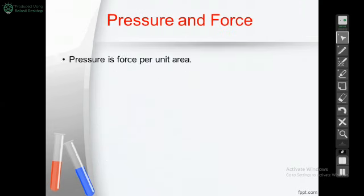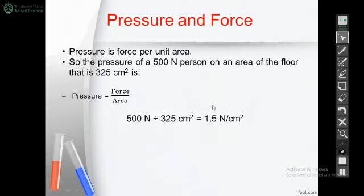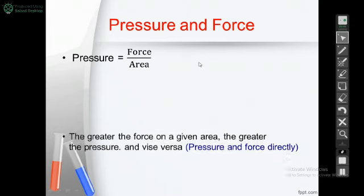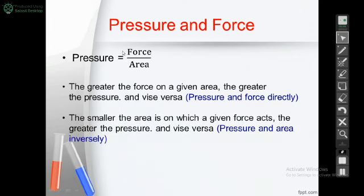Pressure equals force per unit area. If we want to calculate the pressure of a person exerting 500 Newton of force on an area of 325 centimeters squared, the pressure equals force over area, which gives us 1.5 Newton per centimeter squared. The relation between pressure and force is directly proportional — the greater the force, the greater the pressure. The relation between pressure and area is inversely proportional — the smaller the area, the greater the pressure.